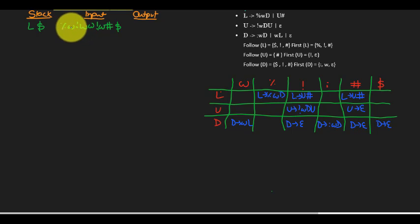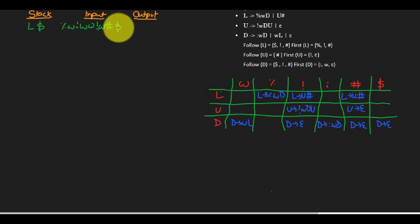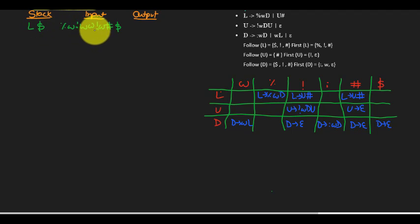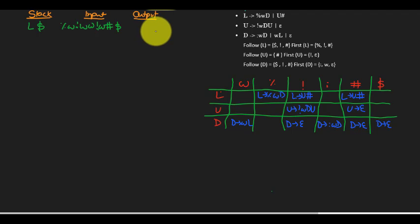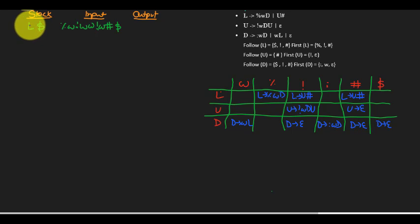The first thing you should do is always attach the input string with a dollar sign at the end to signify that it's reached the ending state. You have three columns: the stack will keep track of the input string that's been matched or not, and the output will give us the output rules used while matching. The first thing you should do is insert the stack symbol and then the start symbol into the stack.